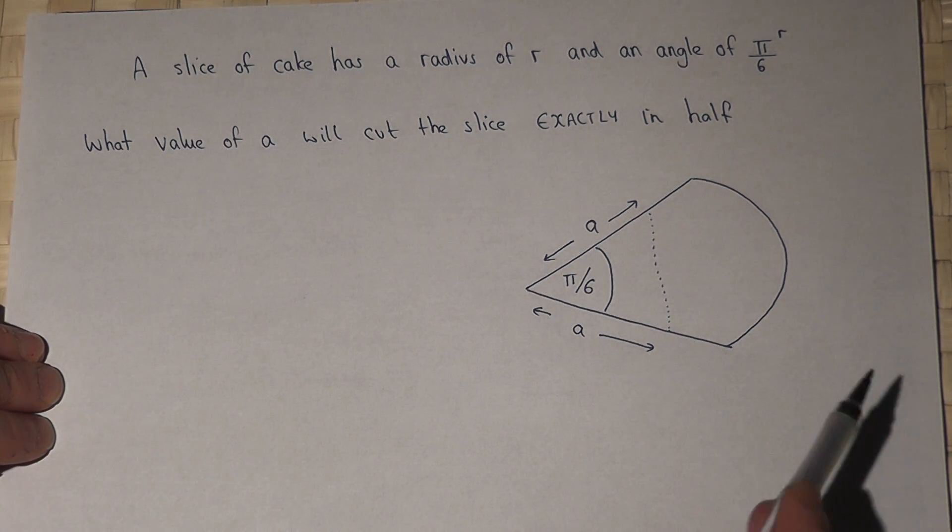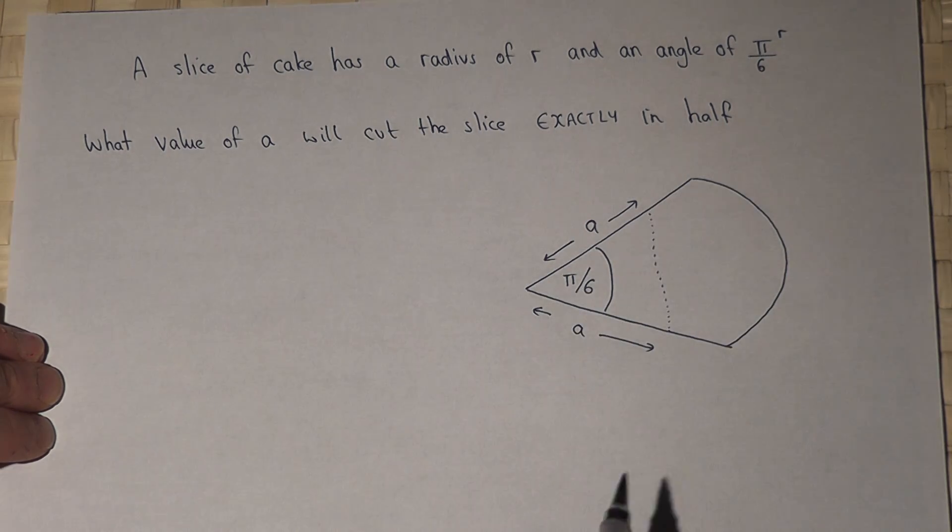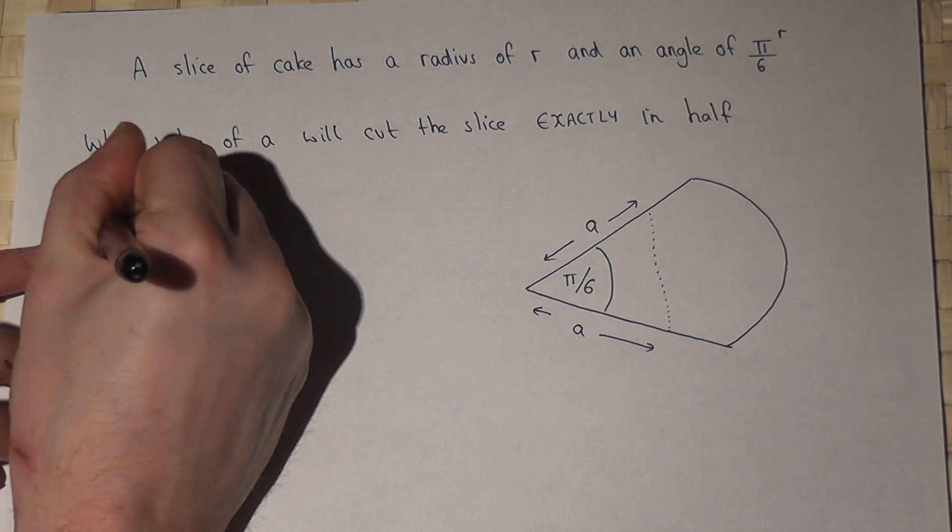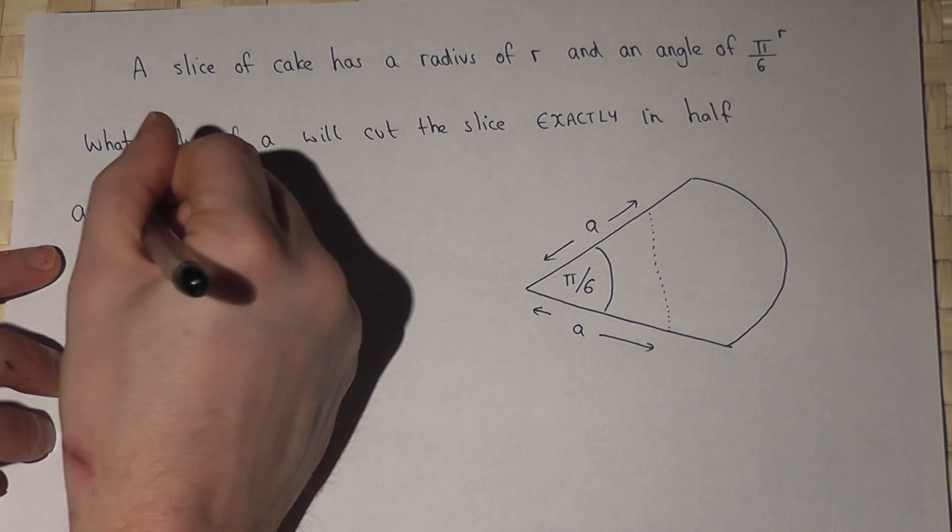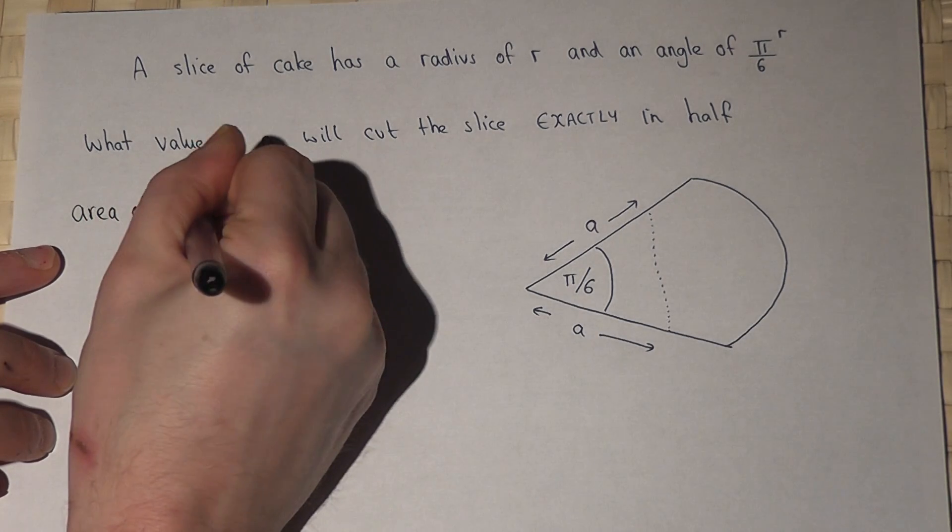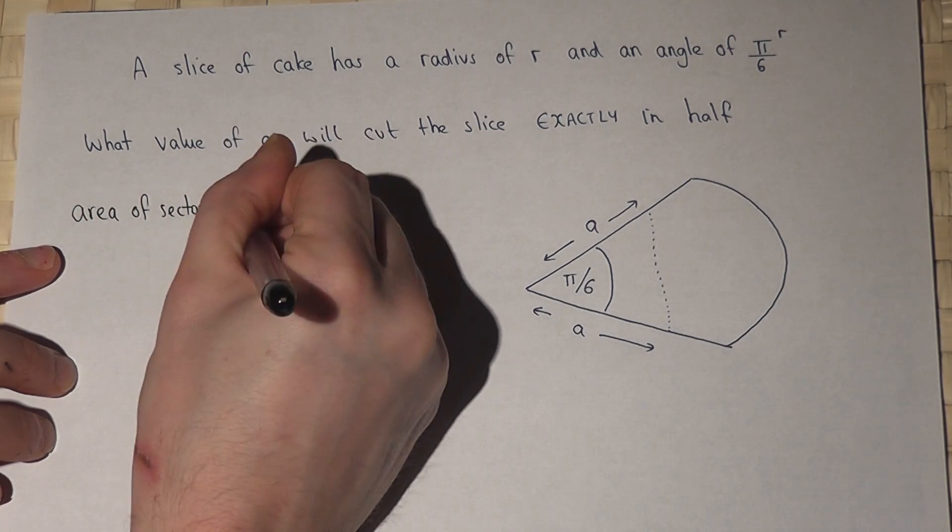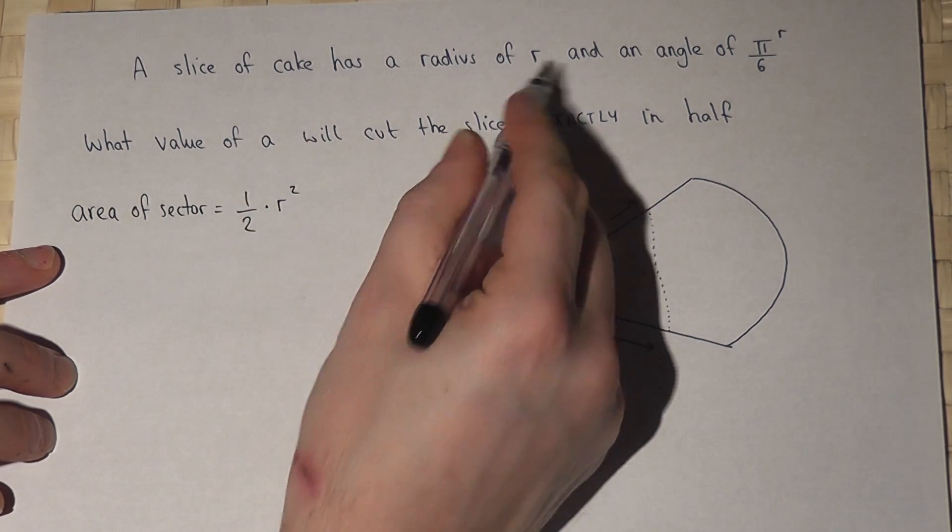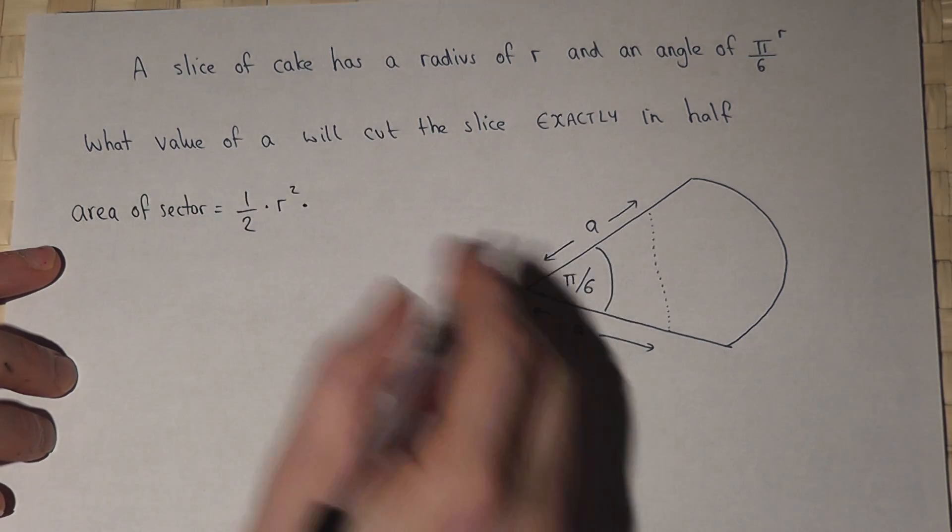Now we know that because the angle is given in radians that the area of the entire sector will equal a half R squared times theta.